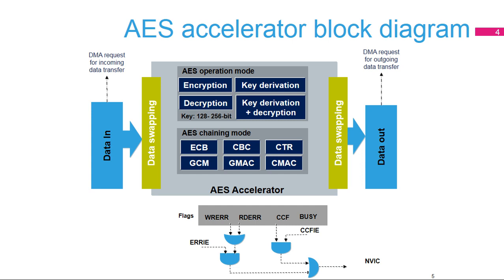The Error Flags block checks the behavior of the AES accelerator via two different flags. The Read Error Flag, RDERR, is set in the AES status register when an unexpected read operation is detected during the computation phase or during the input phase. An interrupt can be generated when one of these two error flags is set if the Error Interrupt Enable, ERRIE bit, in the AES control register was previously set. Two extra flags are available to give the status of the current operation. The Computation Complete Flag, CCF, is set by hardware when the computation is complete. An interrupt is generated if the CCF Interrupt Enable bit was previously set. The Busy flag, used only with GCM mode, indicates that a higher priority message can interrupt the current message during the GCM payload phase for encryption mode.